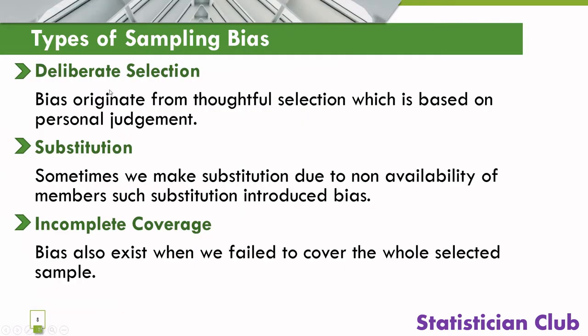Deliberate selection: bias occurs from thoughtful selection which is based on personal judgment. In non-probability sampling, most sampling methods are based on personal assessment and judgment, so in such cases bias will occur.